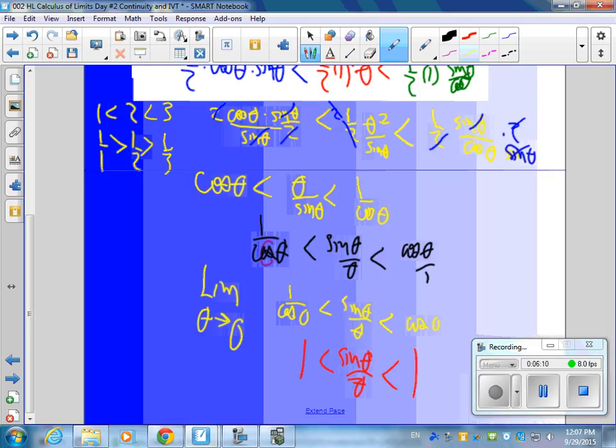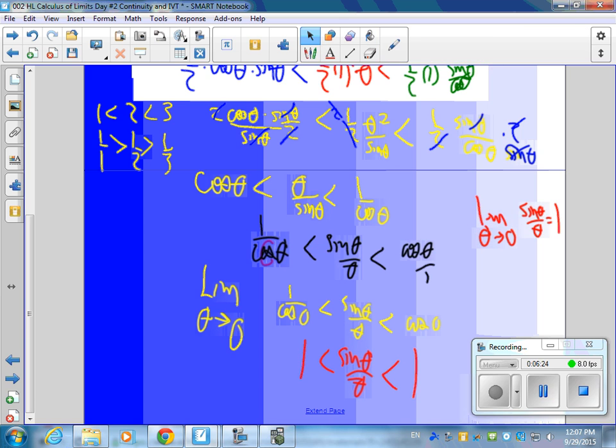Oh. What is it? It's 1. Yes. So the limit as theta goes to 0 of sine theta over theta is 1. And we'll do more with that tomorrow. Thank you for being patient. And enjoy your day.